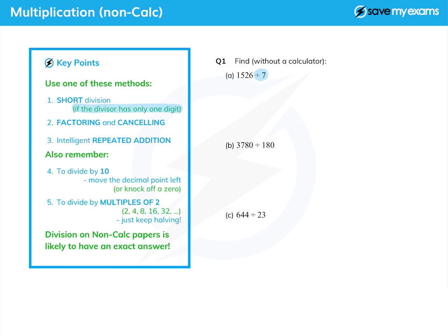So question 1a there we're dividing by seven so that might be good. Factoring and cancelling I'll show you about that, but this is good - look we can already see in part b there are some factors of 10 we can knock off. And then the intelligent repeated addition - essentially what we're doing is multiplying until we get to where we want to be.